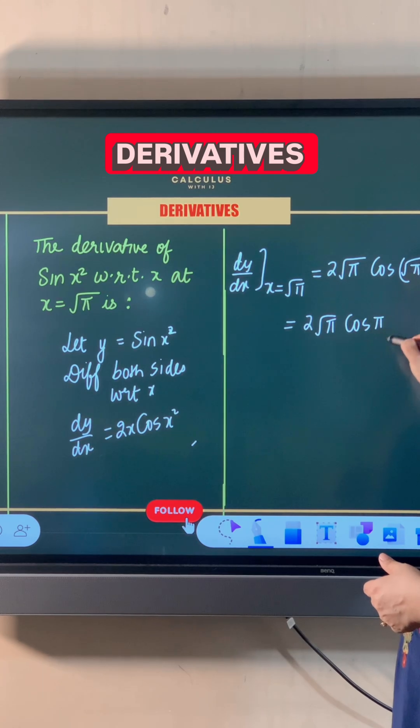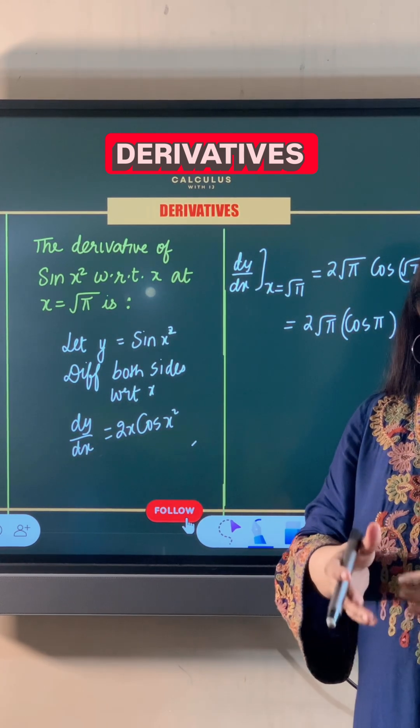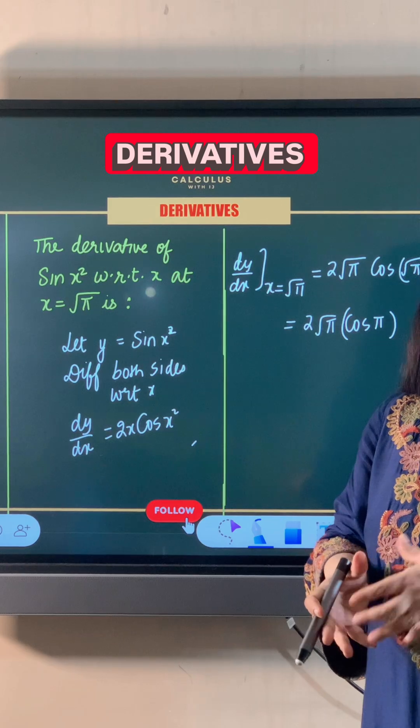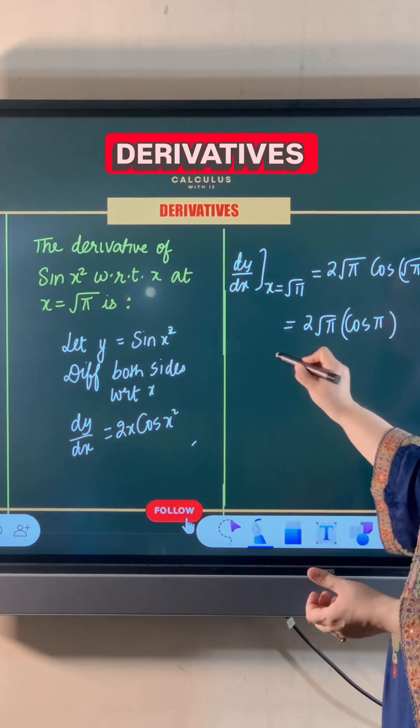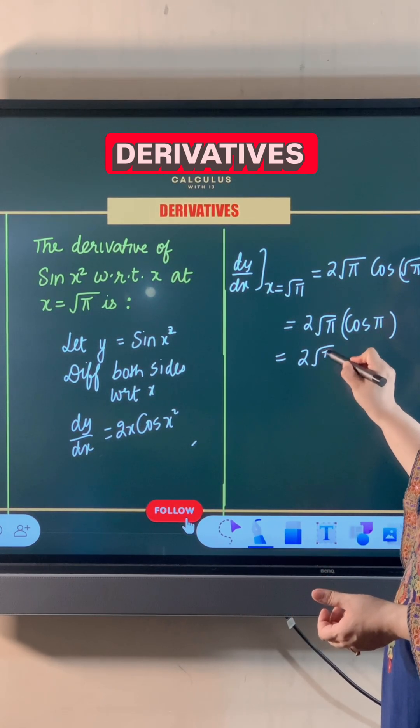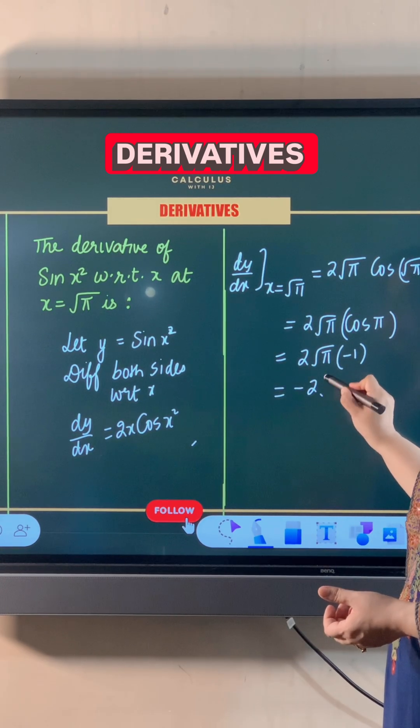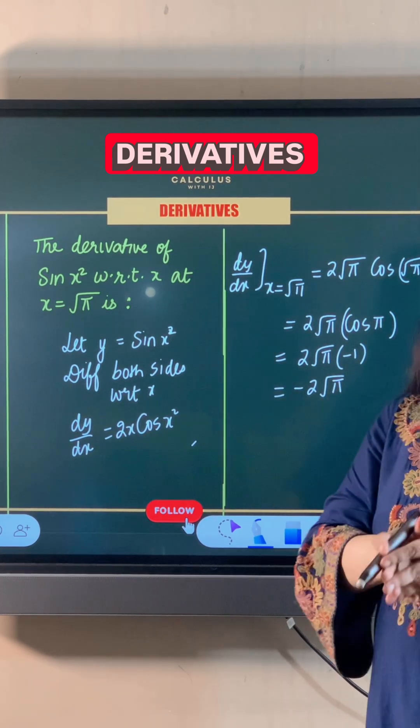Now value of cos π, π is 180 degrees. Value of cos 180° is -1. So this becomes 2√π multiplied by -1. So final answer is -2√π.